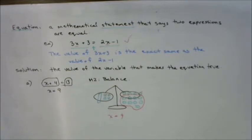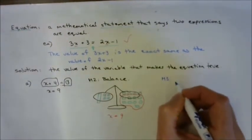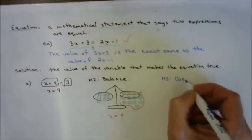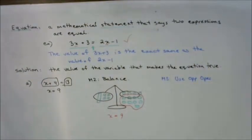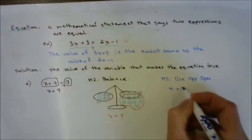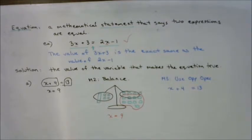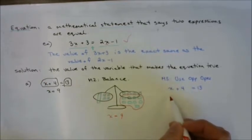The last strategy is Method 3, which is the one we use most often: use opposite operations. For example, the opposite of addition is subtraction, and the opposite of division is multiplication. Taking the equation x plus 4 equals 13, we want something that will leave us with x alone. Right now x has 4 being added to it, so I subtract 4 from the left side.